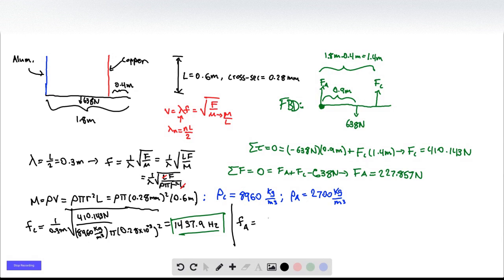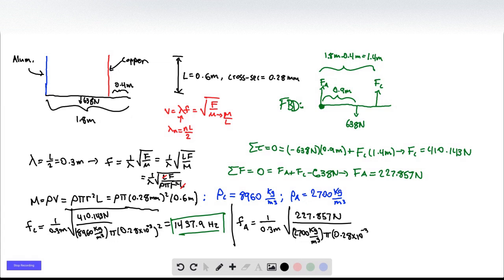So that's going to be 1 over 0.3 meters times the square root of the aluminum force, 227.857 newtons, divided by rho for aluminum, which is 2,700 kilograms per meter cubed times pi times 0.28 times 10 to the minus 3 meters squared. Which is 1,951.17 hertz.